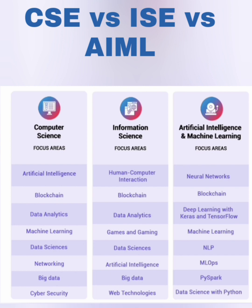Data analytics is there in computer science and information science. It's also part of artificial intelligence, covered under the name data science with Python. However, AIML is not heavily focused on data — it covers initial concepts of data science. A complete end-to-end data sciences curriculum is found in a separate branch called AI and Data Sciences (AI & DS).